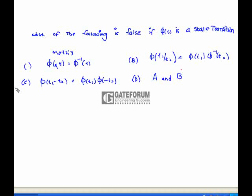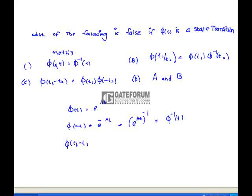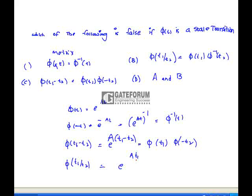The following is a false statement about the state transition matrix. Here φ(t) = e^(At). φ(−t) = e^(−At) = [e^(At)]⁻¹ = φ⁻¹(t) — this is a correct statement. Also, φ(t₁ − t₂) = e^(A(t₁−t₂)) = φ(t₁)·φ(−t₂) — option C is also correct. However, φ(t₁ − t₂) ≠ φ(t₁)·φ⁻¹(t₂), making option B the wrong statement. Hence option B is correct.